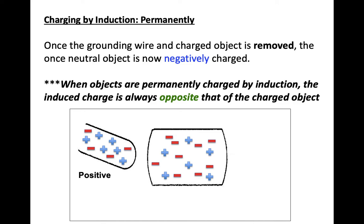Once the grounding wire and charged object is removed, the once neutral object is now negatively charged because we brought up those electrons from the ground through the grounding wire. When objects are permanently charged by induction, the induced charge is always opposite of that charged object.